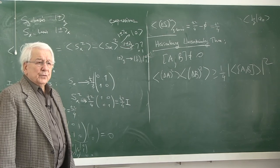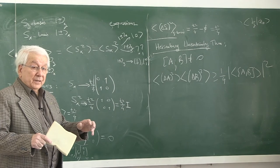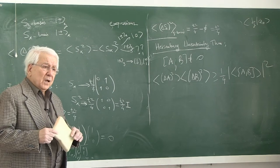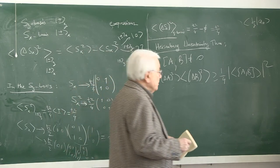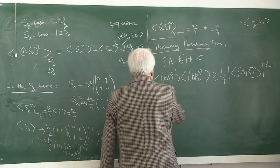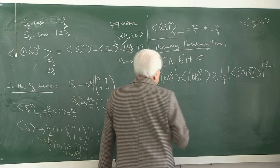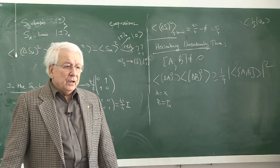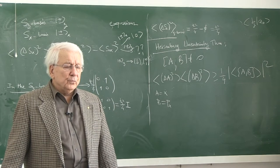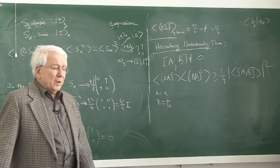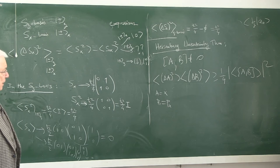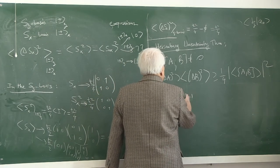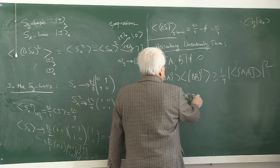Before proceeding to prove this theorem, let me illustrate it on a well-known example. If A is x and B is Px — the usual position and momentum operators — we are borrowing from the future here, as we will move into that discussion soon when we move into dynamics. What is the commutation relation of A and B?